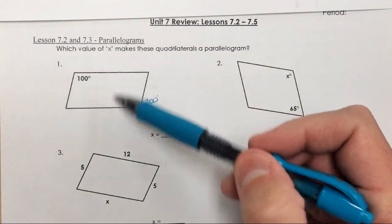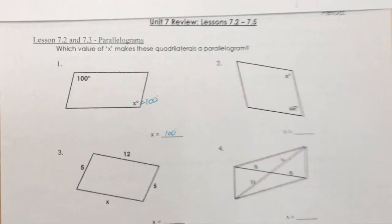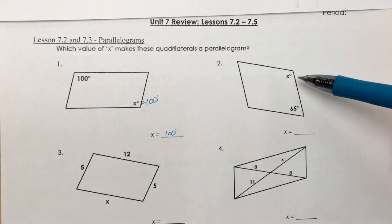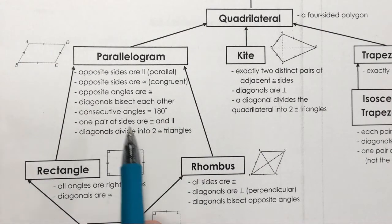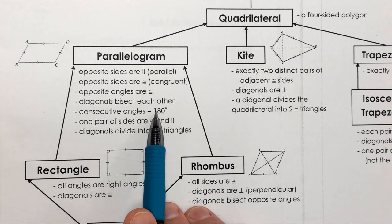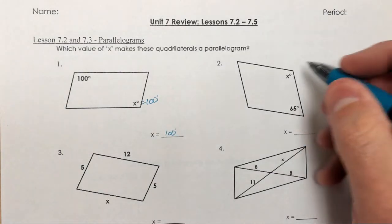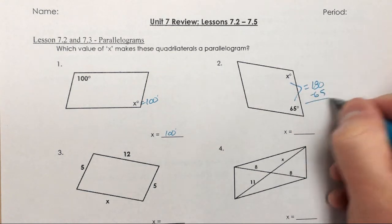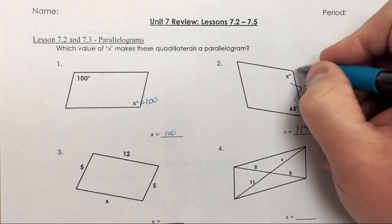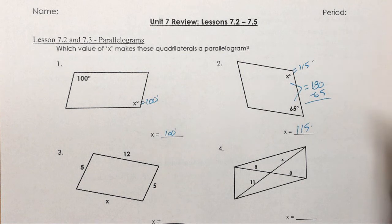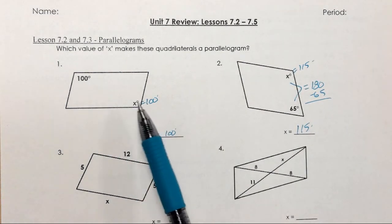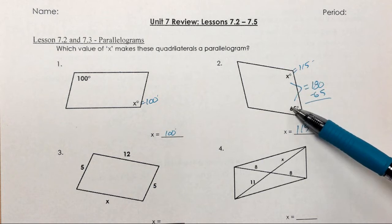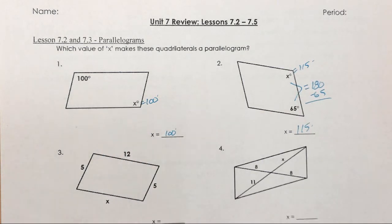Since these sides are parallel to each other, opposite sides being parallel forces opposite angles to be congruent. Number two is also focusing on angles, but on consecutive angles rather than opposite angles. Consecutive angles are angles that are next to each other, and they must add up to 180 degrees. Since I know one of them is 65 degrees, I take that away from 180 and I'm left with 115 degrees. So this angle measure is 115 degrees.